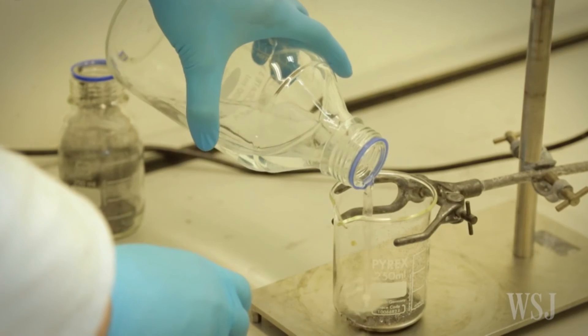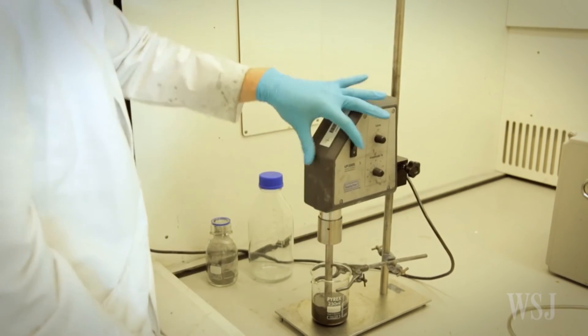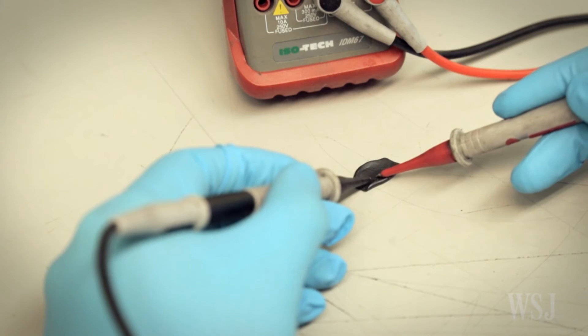According to researchers, the putty is hundreds of times more sensitive than traditional sensors. When the G putty was placed on a person's chest or neck, it was able to measure breathing, pulse, and blood pressure, which means it could be used as part of a wearable medical device.